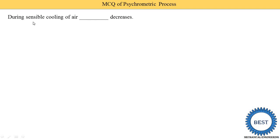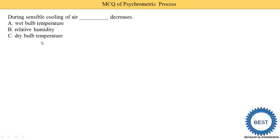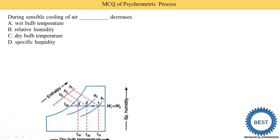First MCQ: during the sensible cooling of air, which parameter is decreased? Options are: wet bulb temperature, relative humidity, dry bulb temperature, or specific humidity. The basic thing is that when sensible cooling is done — in fact, in any sensible process, either cooling or heating — there is no change in specific humidity, only change in temperatures. So the answer is dry bulb temperature.